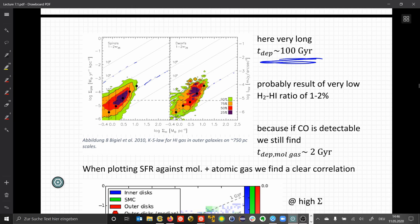It takes much longer for the atomic gas to produce stars. This is probably the result of very low ratios between molecular and atomic gas, in the order of 1 to 2 percent, because if we happen to be able to observe CO in these galaxies, then we find for the molecular gas still depletion times in the order of 2 gigayears.